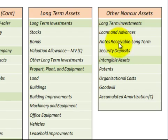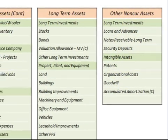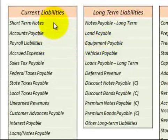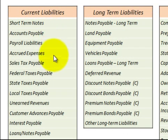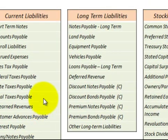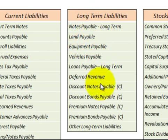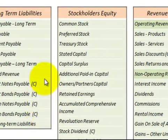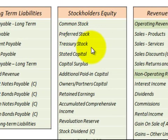Looking at other non-current assets — just scanning through. Current liabilities are all listed here. Moving up to long-term liabilities — those are listed as well. Notice again the little 'C' which designates a contra account.